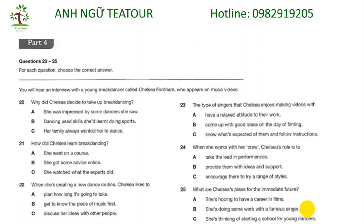I'm talking to the young breakdancer, Chelsea Fordham. Why did you choose this type of dance, Chelsea? I grew up playing tennis and going swimming, so I was always pretty fit. Then one day, out shopping, there were some breakdancers performing in the mall. It was the coolest thing I'd ever seen. I just wanted to do it. My mum thought it was strange, because I'd always refused to go to ballet classes as a kid.